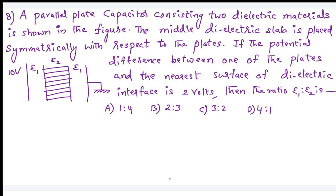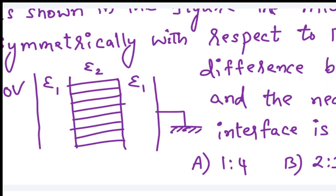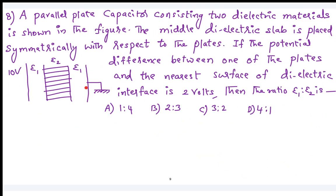See this next problem — take your time. There is a parallel plate capacitor consisting of two different dielectric materials as shown in the figure. The middle dielectric slab is placed symmetrically with respect to the plates. If the potential difference between one of the plates and the nearest surface of the dielectric interface is 2 volts, find the ratio epsilon_1 by epsilon_2.